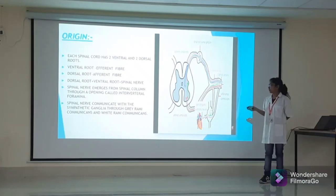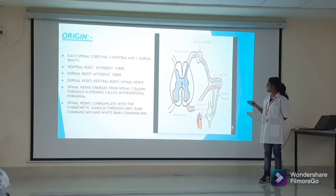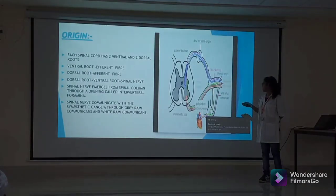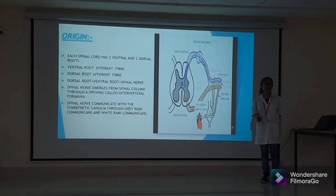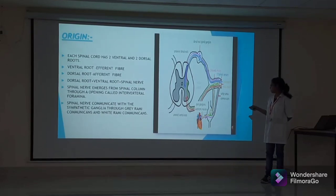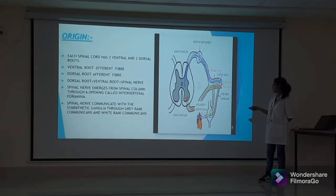The spinal cord has two ventral and two dorsal roots. Ventral roots form the efferent fibres and dorsal roots form the afferent fibres. Dorsal and ventral roots form the spinal nerve, which emerges from the spinal column through the intervertebral foramina. The spinal nerve communicates with the sympathetic area through white rami communicantes and grey rami communicantes.